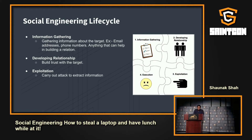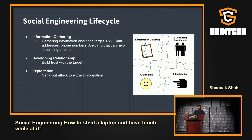The social engineering life cycle starts with information gathering, then developing a relationship, and then exploitation. Information gathering is one of the most important steps and you should spend as much time as you can on it, because this will determine how you develop the relationship. Developing the relationship is critical because the quality of that relationship determines how much the target trusts you when you perform the attack. This then leads to exploitation and ultimately to profit.